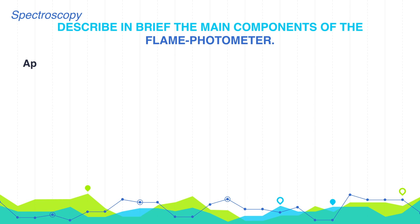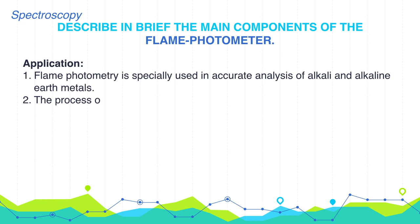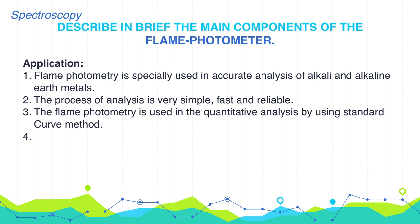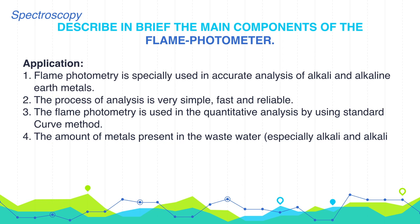What are the applications of flame photometry? First, flame photometry is specially used in accurate analysis of alkali and alkaline earth metals. The process of analysis is very simple, fast, and reliable. Flame photometry is used in quantitative analysis by using standard curve method. The amount of metals present in wastewater, especially alkali and alkaline earth metals, can be easily detected.